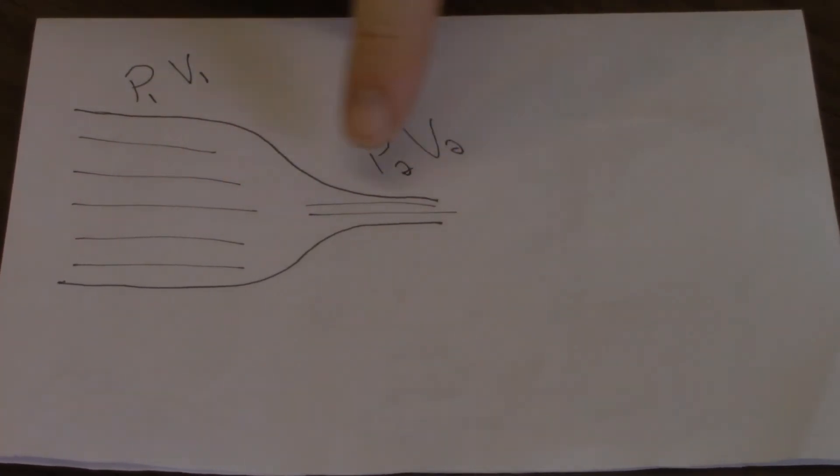this water in here, this narrow section of pipe, will move much quicker, but be under much lower pressure. So the velocity of it will be much higher, and the pressure will be much lower here and much higher here.